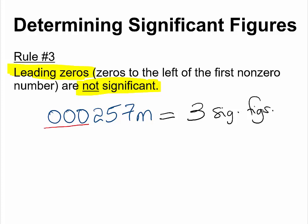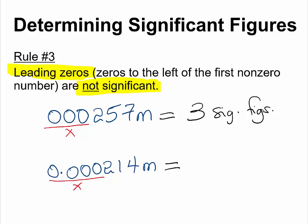This is also another example of that: 0.000214 meters. All of these zeros are also not significant, just like those in the first number, because they are simply placeholders. Which means this number will end up as three significant figures. That is rule number three.